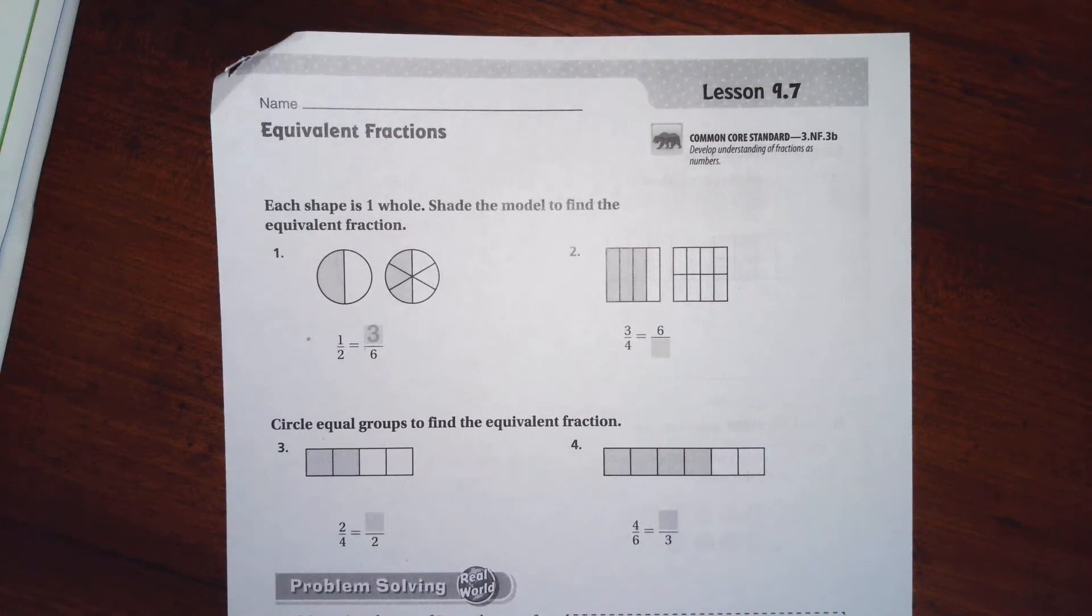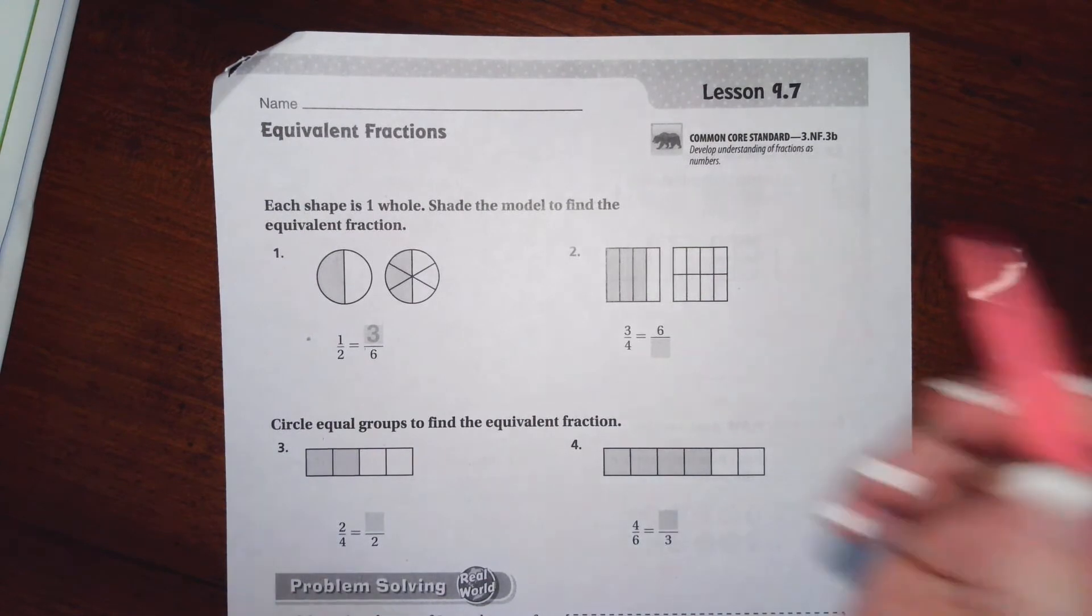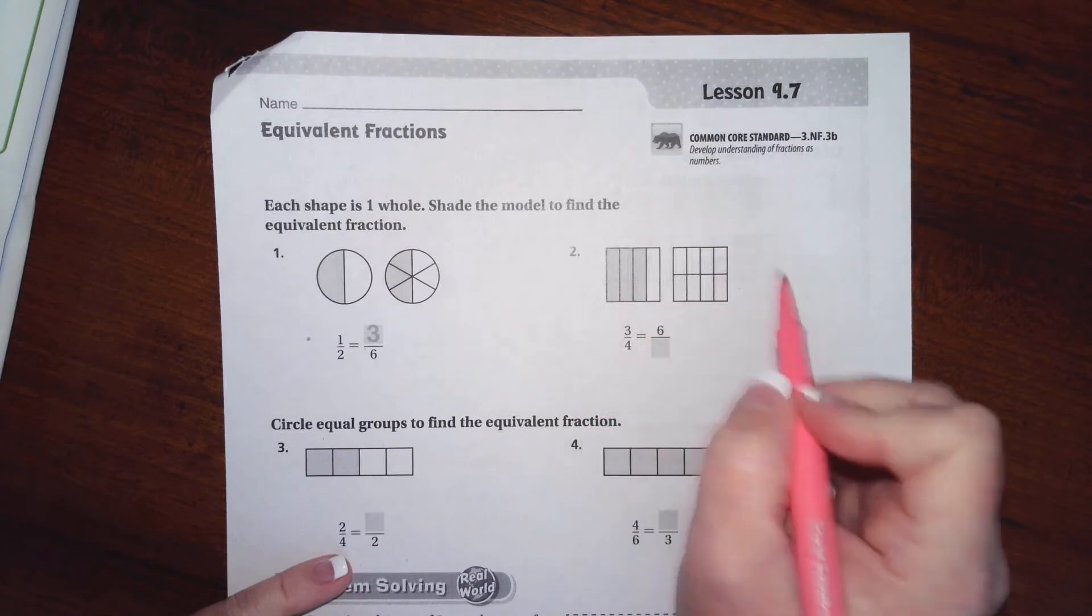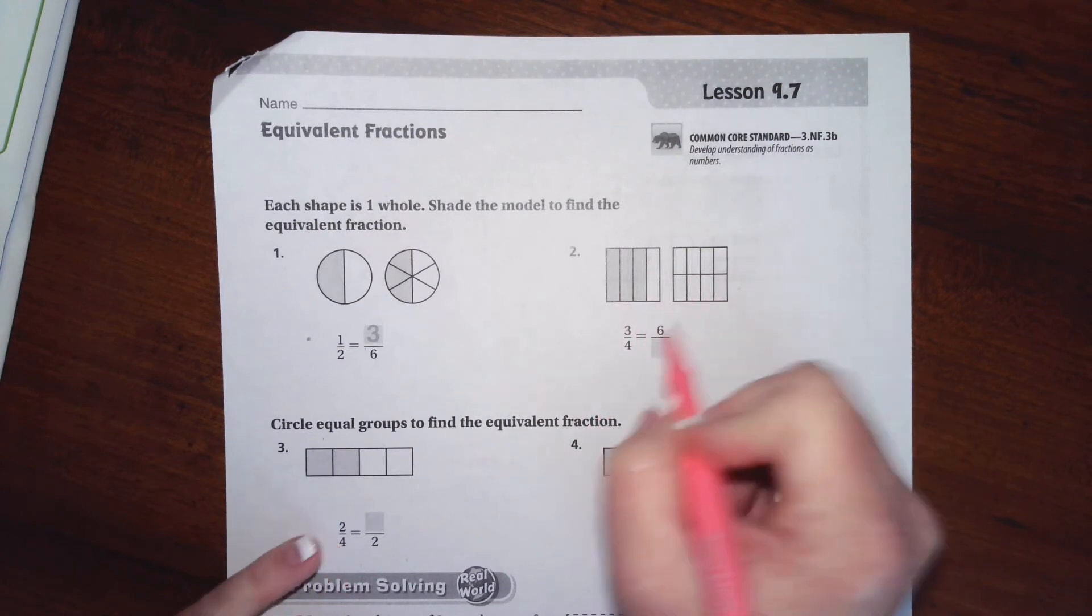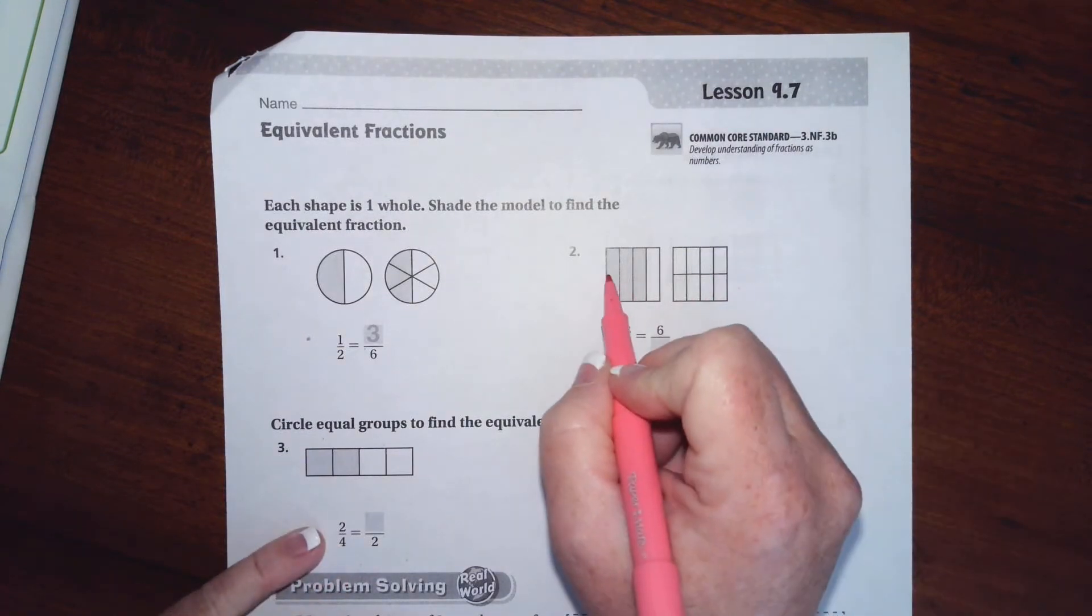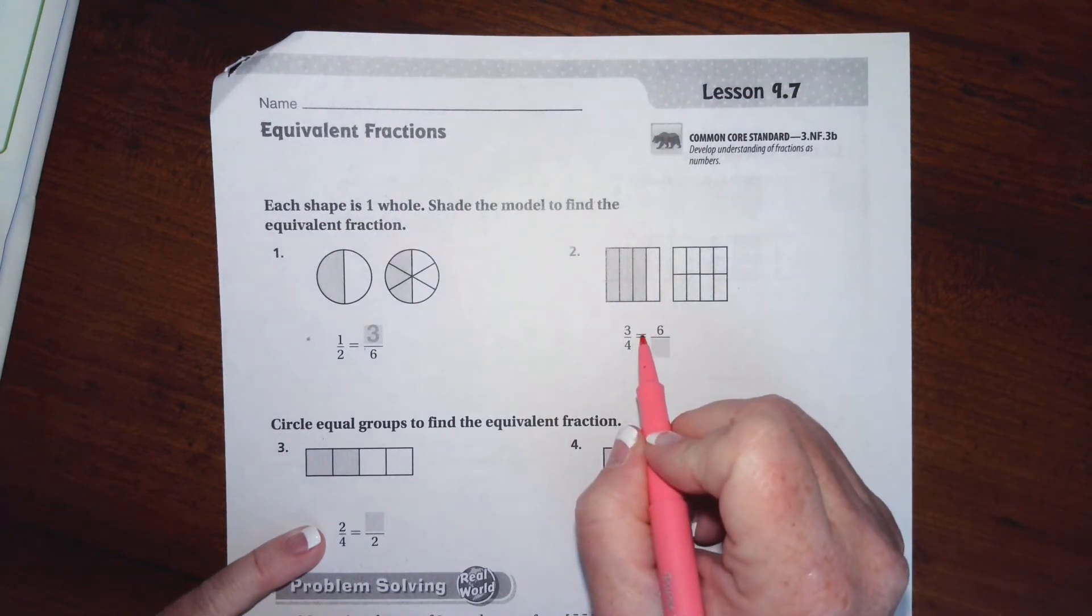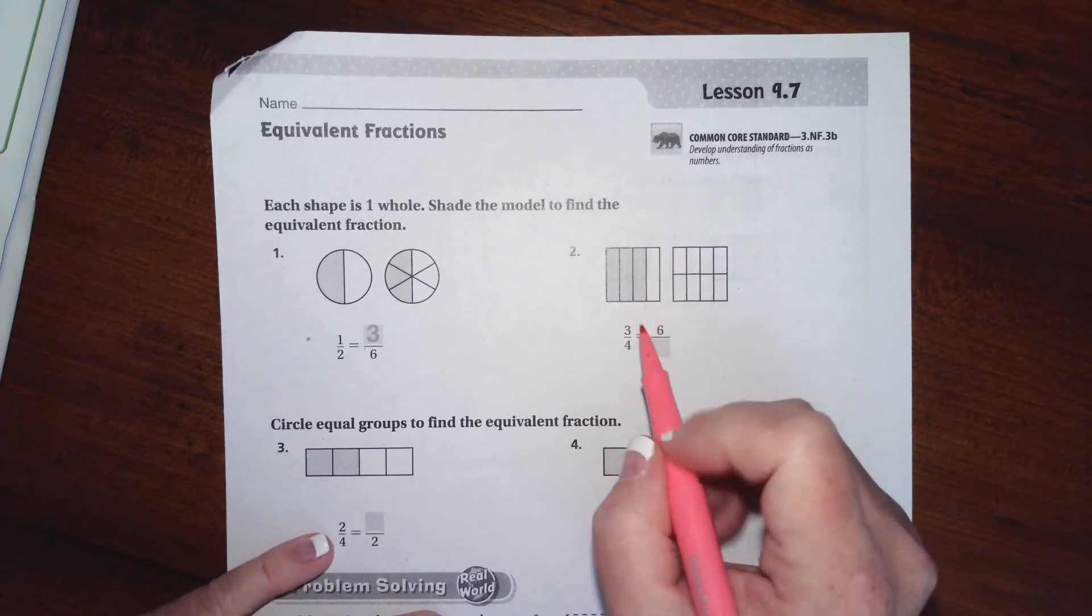Hi guys, welcome to third grade chapter 9 lesson 7 and the finale of chapter 9, so let's get started. These want you to be able to transfer what it gives you into a new thing, so we're going to see how we do that by multiplying.